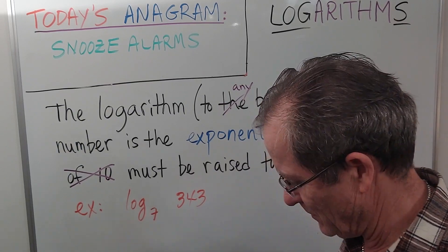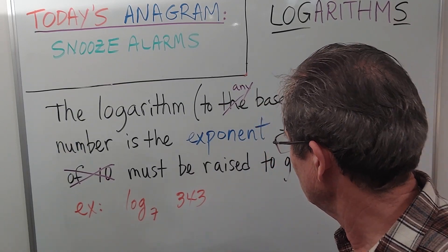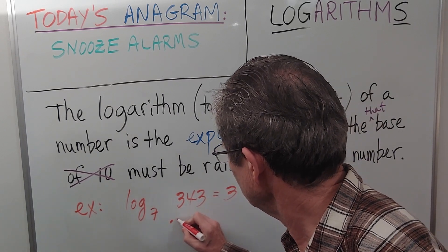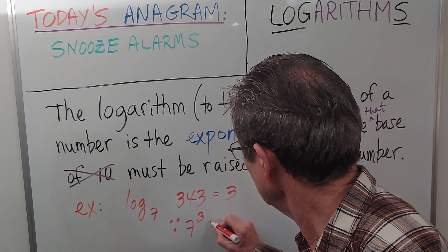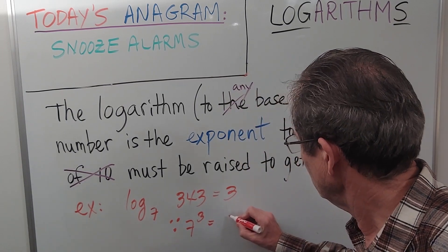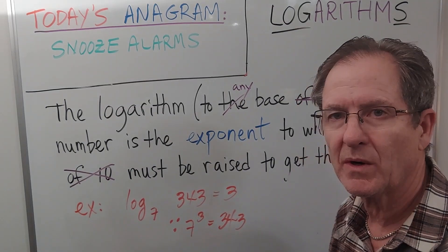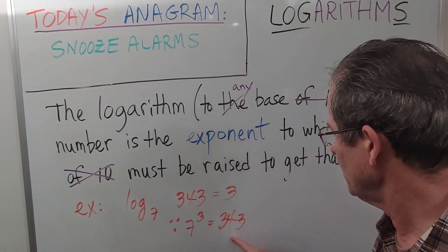The log to the base 7 of 343 is equal to 3, since 7 to the 3 is 343. 7 squared is 49, 49 times 7 is 343.